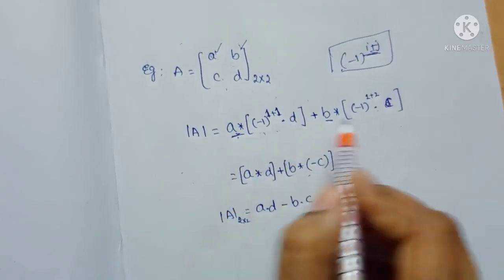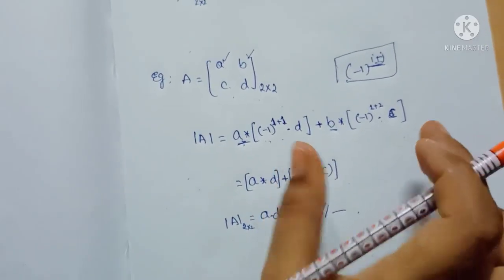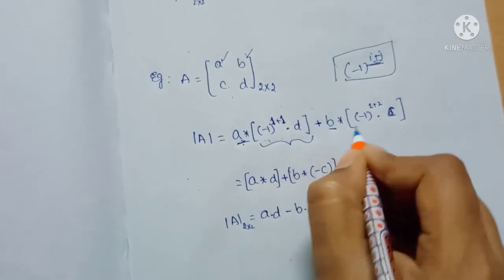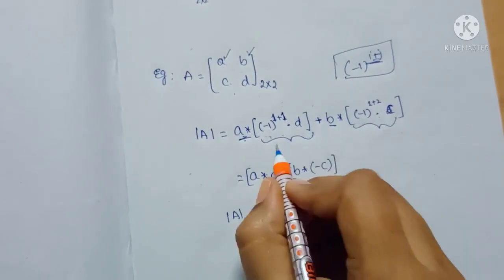These elements are multiplied with the cofactor matrix. Here, this is the cofactor matrix. And how to find the cofactor matrix?